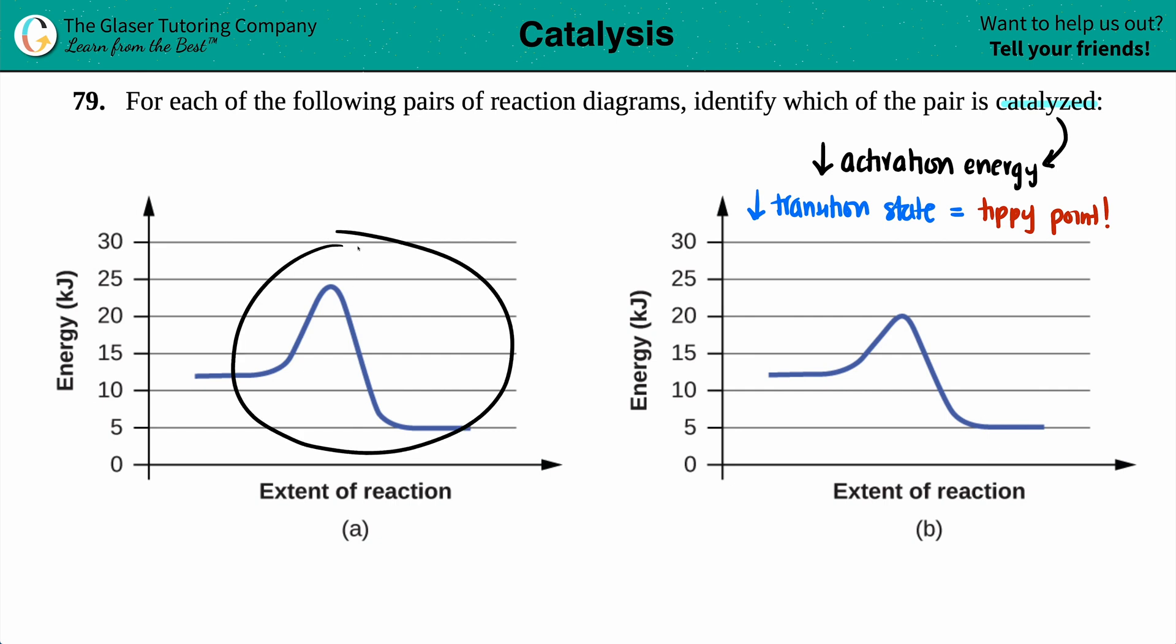In this reaction, you have the highest tippy point right here, which is coming in at maybe 24 kilojoules as your transition state. Over here, your tippy point is right here, which is coming in at a whopping 20.